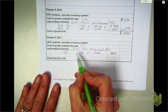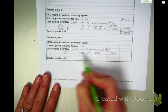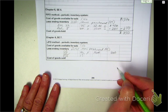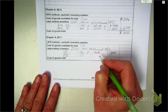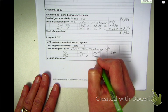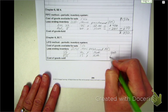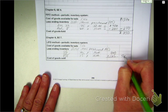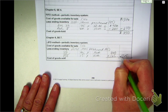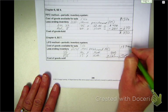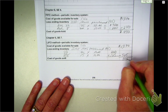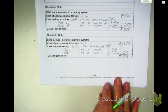40 items times $10 per item equals $400. And then, I've got to get from 40 to 55. I've got 15 more units, and that's going to be from the August 8th purchase at $11 per unit. $165. So, that's going to be $565. I take the $1370 again minus the $565. And I get, the value of my cost of goods sold is $805.